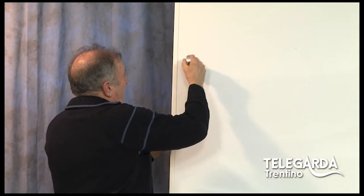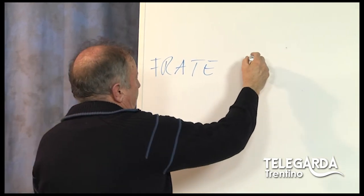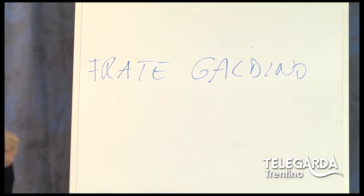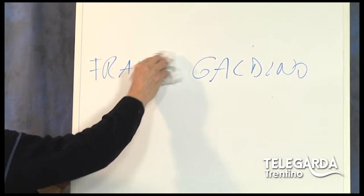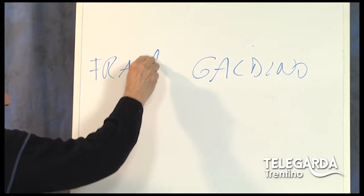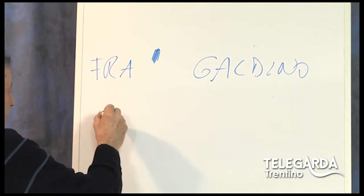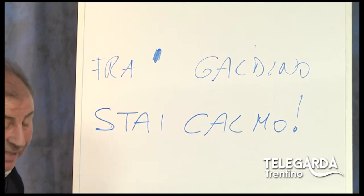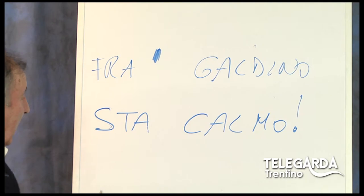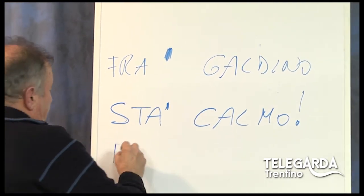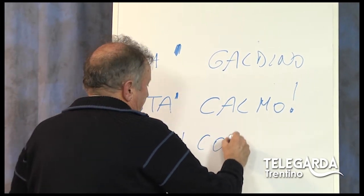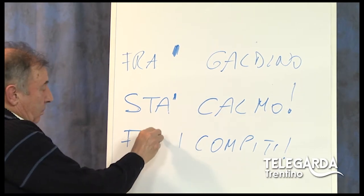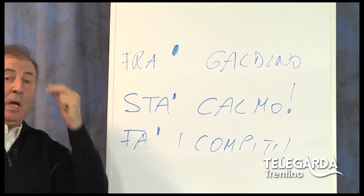Eccolo qua. Quando uso la parola "frate", noi abbiamo qua i frati di San Martino e delle Grazie. Ho detto "fra Silvio Bottes", non ho detto "frate". Allora se io voglio dire "fra Galdino", devo far cadere le due lettere e al loro posto metto l'apostrofo. Un altro esempio: "stai calmo" oppure "fai i compiti", che diventa "fa' i compiti". L'apostrofo quindi sostituisce una o più lettere che vengono tolte.